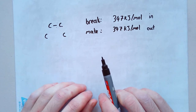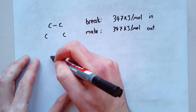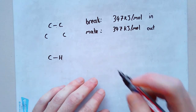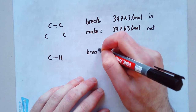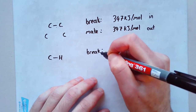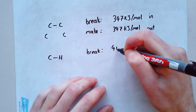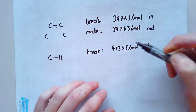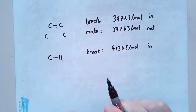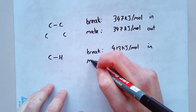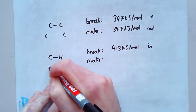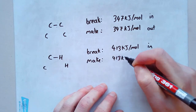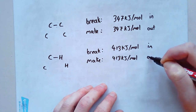We could do the same for any number of bonds, and you're not expected to know these numbers off by heart. For a carbon-hydrogen bond, in order to break that bond I need 413 kilojoules per mole in, which essentially means it's a stronger bond — I need to put more energy in to break it. If I were going to make that bond from a separate carbon and hydrogen, I would get 413 kilojoules per mole out.